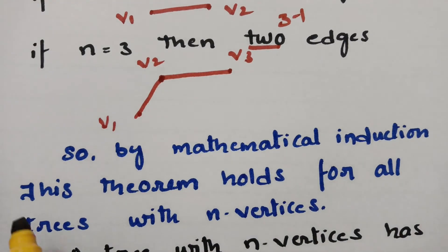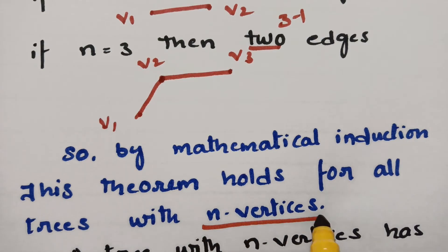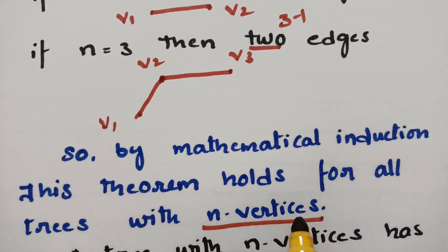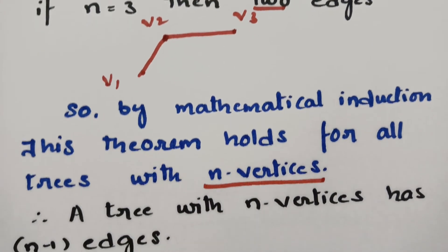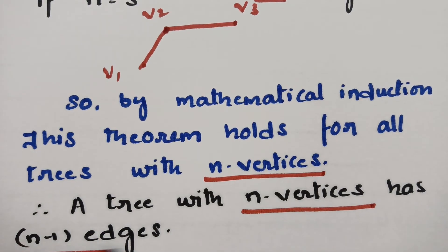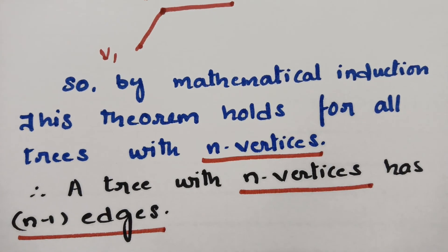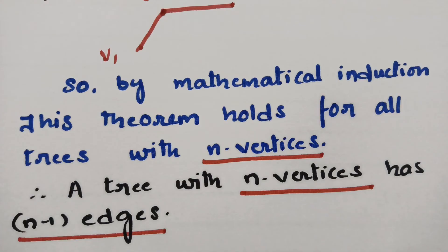By mathematical induction, this theorem holds for all trees with n vertices. If I take n vertices, I will get n minus 1 edges. This is true for all positive integers. Therefore, according to our statement, a tree with n vertices has n minus 1 edges. We take n equal to 1, 2, 3, and so on, and state that it is true for all positive integers.